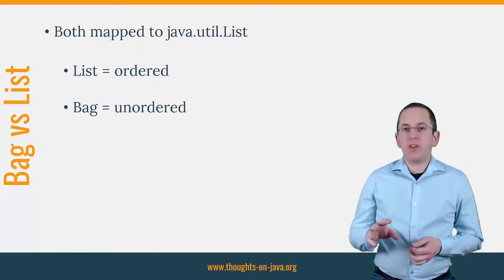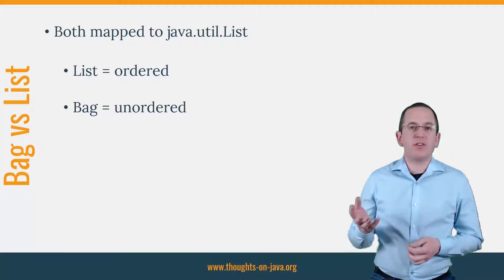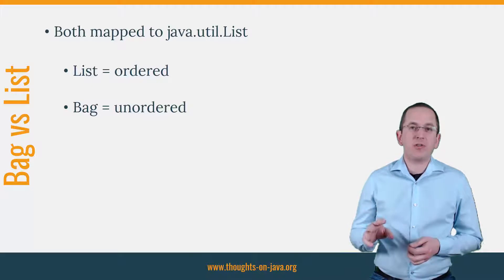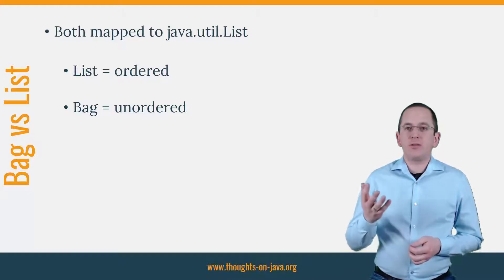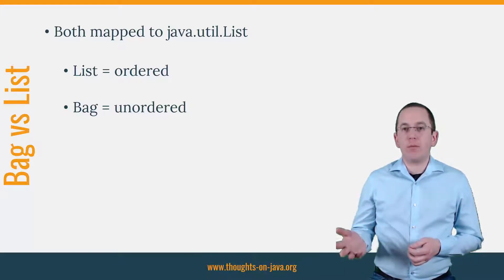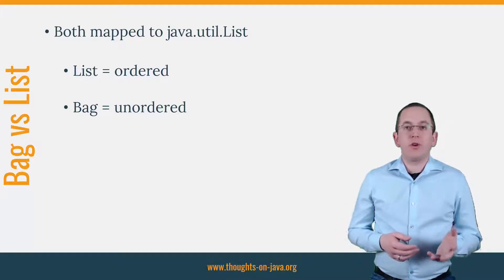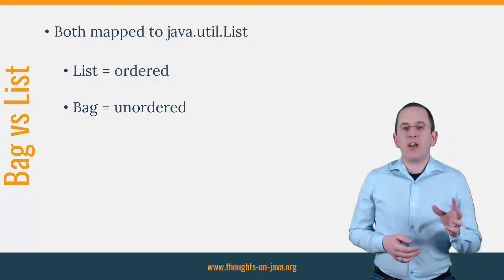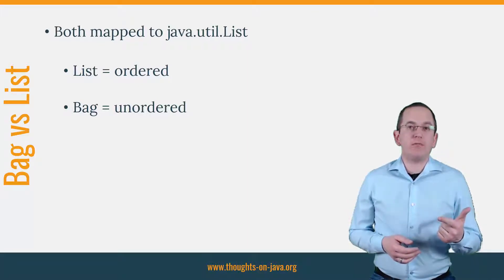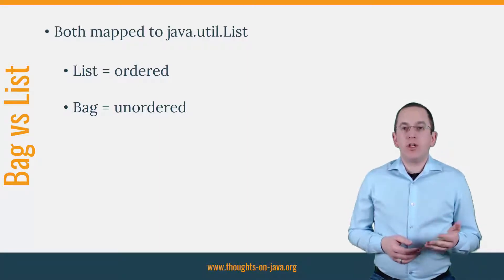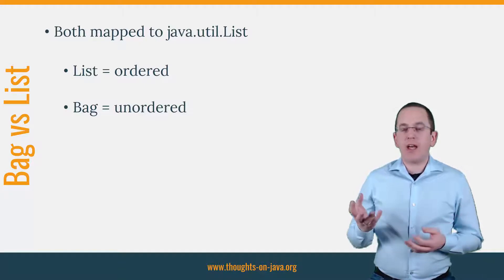That should be the case for most of your associations, because retrieving the association in a specific order slows down your database queries. You should better use a JPQL query with an ORDER BY clause to define the ordering if you need it. So for most association mappings, there are two options remaining: you need to decide between a bag and a set.